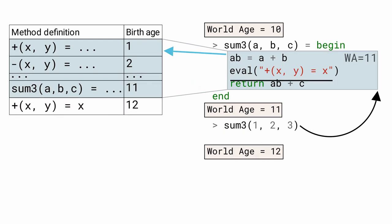However, this new definition is too new to be called in ab plus c. Therefore, the second call to plus resolves to the original definition, and sum3 returns 6, the actual sum of 1, 2, and 3.